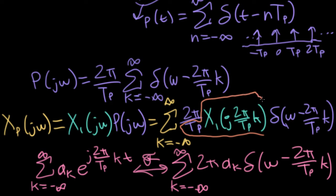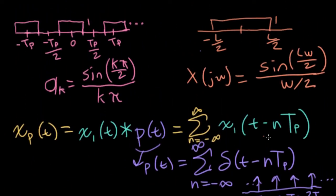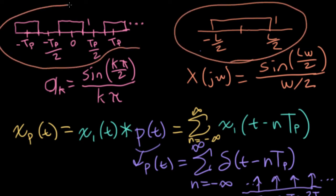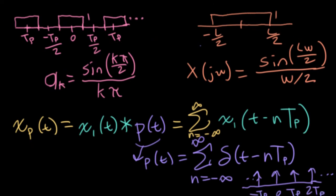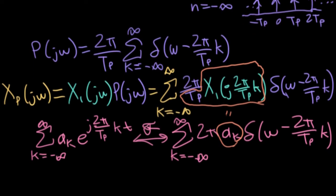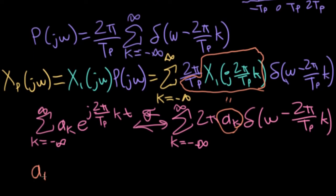So I can actually take this Fourier transform, big x sub 1, divide it by t p, and that's equal to this a k. So this is the thing that provides me the link between the Fourier transform of this core function here and the Fourier series coefficients of its corresponding replicated version. So let me go ahead and write that in a more official looking way.